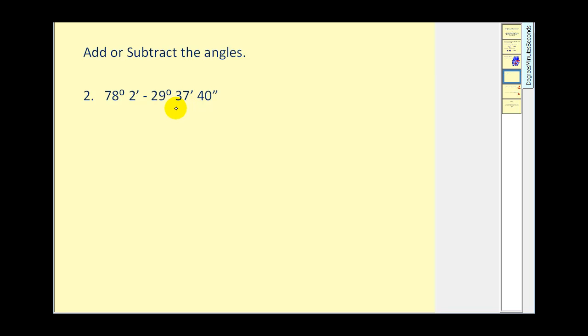Again, I like the vertical method. So let's rewrite this. The first thing we notice is we're going to have to borrow 1 minute to get 60 seconds here. So let's rewrite that as 1 minute and 60 seconds.